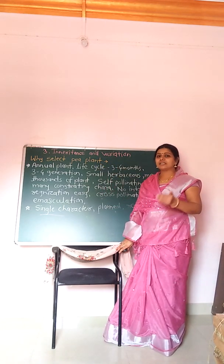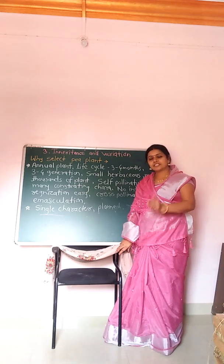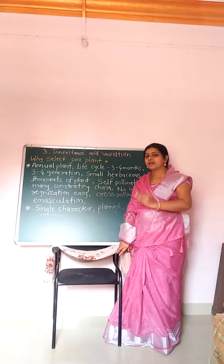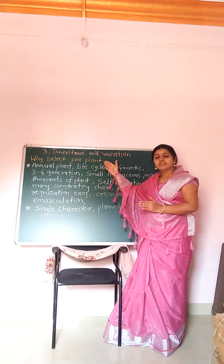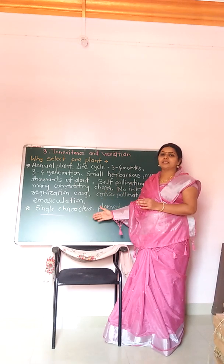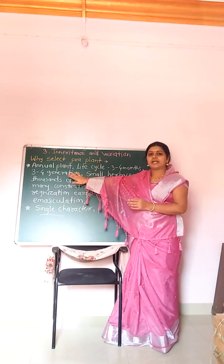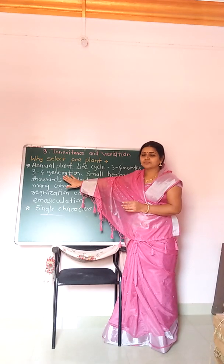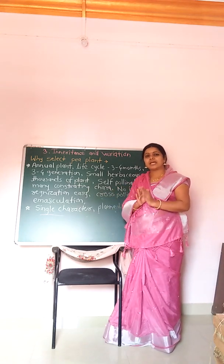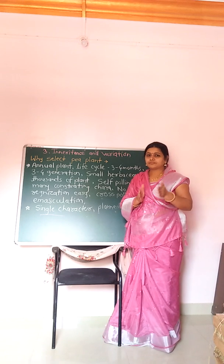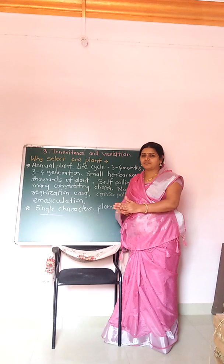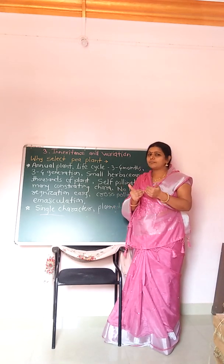Mendel selected the garden pea plant for his experiment. The question is: why did he select only the garden pea plant? The first reason is that the garden pea plant is an annual plant. An annual plant is one whose life cycle — from seed germination to production of seed — is at least one year or below one year.